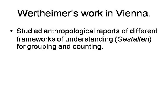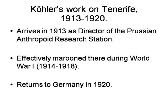Wertheimer also read anthropological reports of numerical thinking by so-called primitive peoples, writing a paper on this in 1912. He noted that in the Pacific some peoples had different ways of counting money, animals and men, each with its own appropriate framework of understanding, or Gestalt. Again, some peoples lacked the Western system of grouping and numbering, and used alternative systems based on natural groups instead.